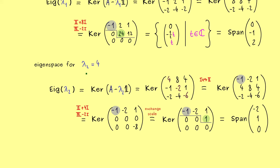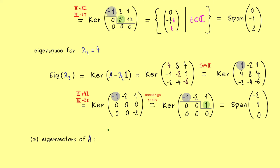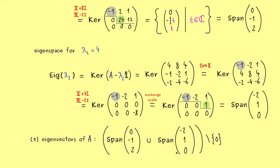For the last step we write down the eigenvectors: we take the eigenspaces and exclude the zero vector. In future videos we will see it is very important that we take non-zero vectors from the eigenspaces — we need well-chosen eigenvectors to, for example, diagonalize a matrix A. However, for this example it is not possible to diagonalize it. The reason is simple: we don't have enough eigenvectors — they don't span the whole space. But that is a topic for another video. I really hope we meet again. Have a nice day and bye bye.